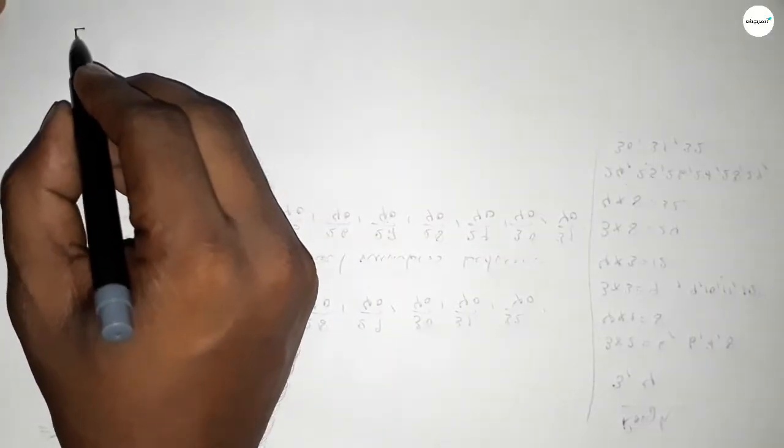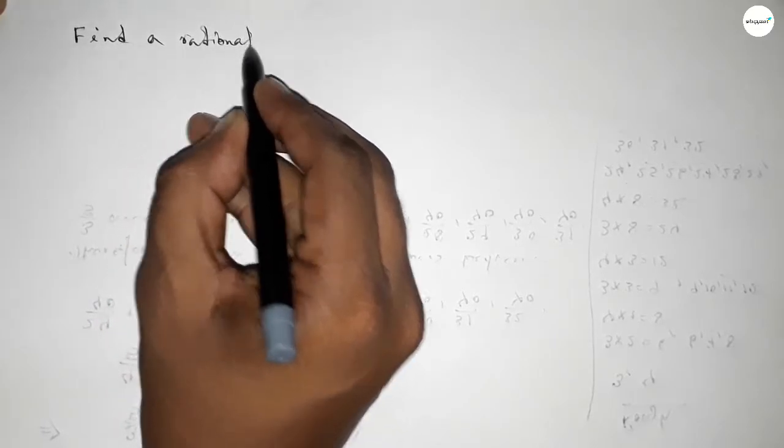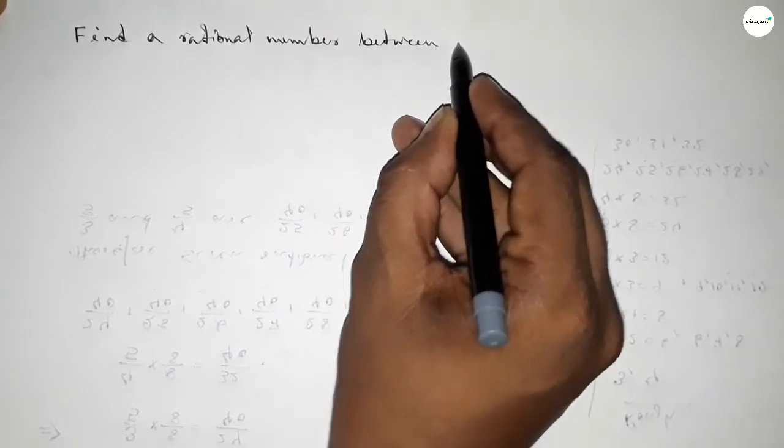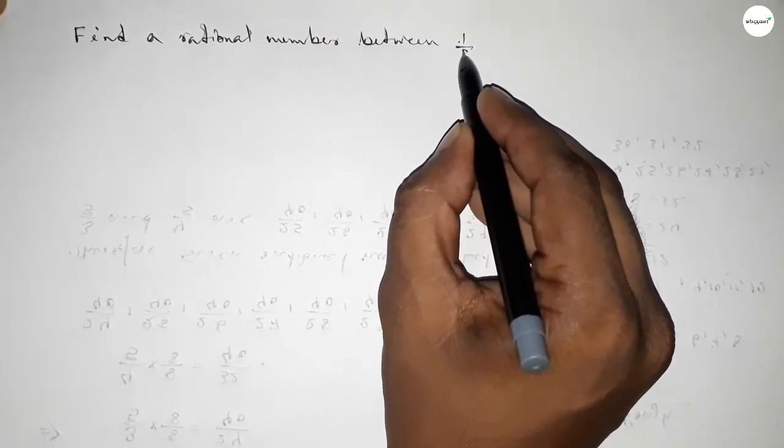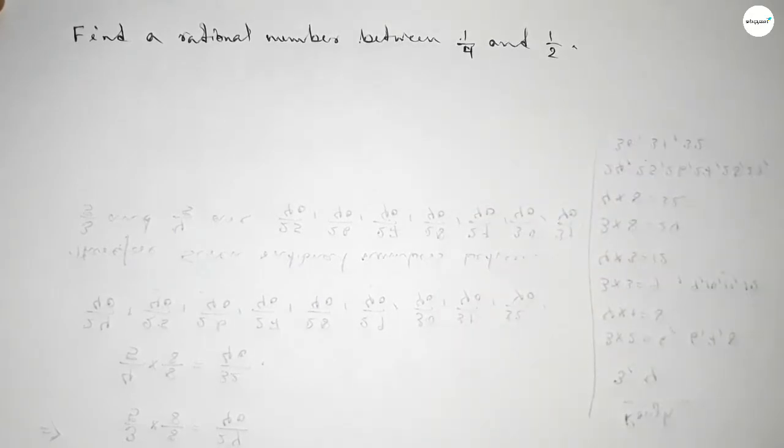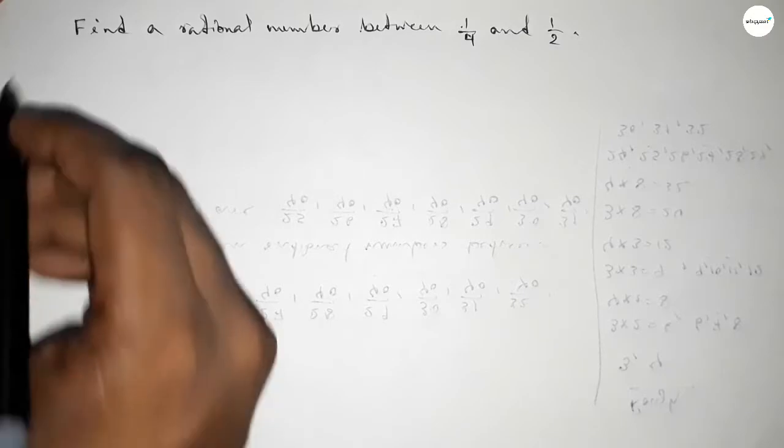Hi everyone, welcome to SH chair classes. Today in this video we have to find a rational number between 1 over 4 and 1 over 2.